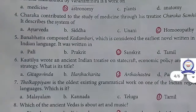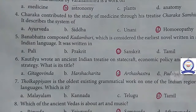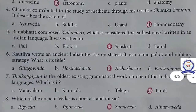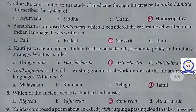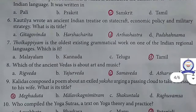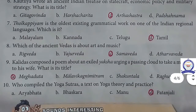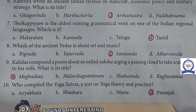Kautilya wrote an Indian treatise on statecraft, economic policy, and military strategy. What is its title? Arthashastra. The next one: Tolkappiyam is the oldest existing grammatical work on one of the Indian regional languages. Which is it? Answer: Tamil.